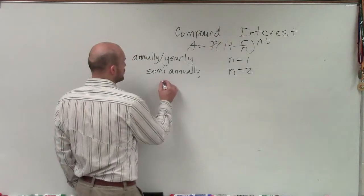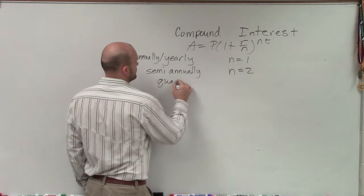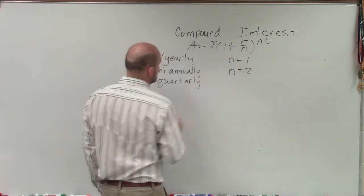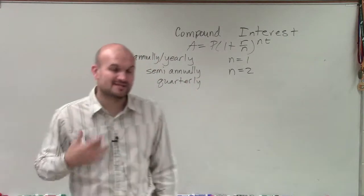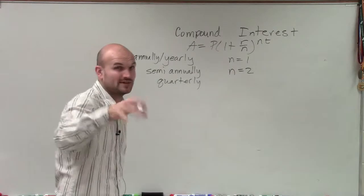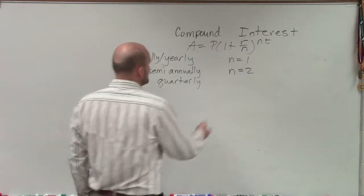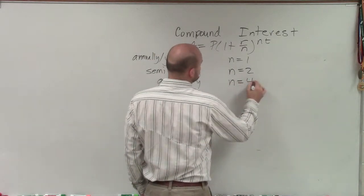And a lot of times we have quarterly. So if I say, hey, we're getting some interest bearings that's going to happen every quarter. Well, that quarter, think about a quarter, four quarters in a dollar. So therefore, quarterly would be N equals 4.